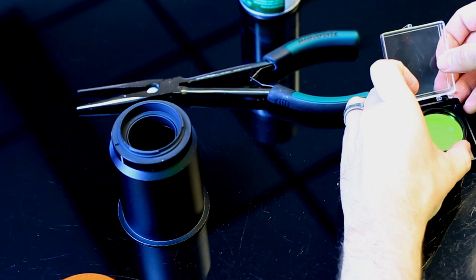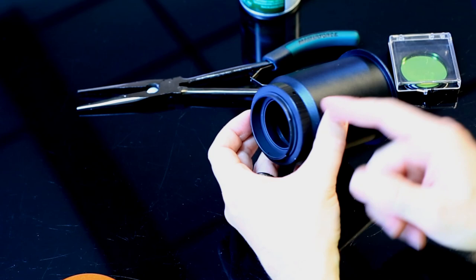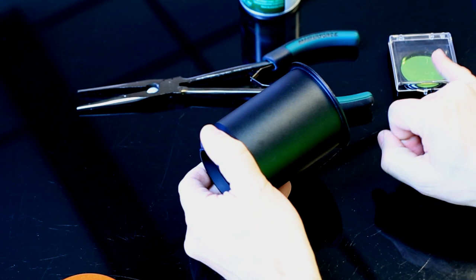So that is an easy way to use filters inside of these t-ring adapters. Now, putting a filter in here is going to change your back focus a little bit. If you've got a two millimeter thick filter, for example, you add one third of your glass thickness to your back focus requirement.